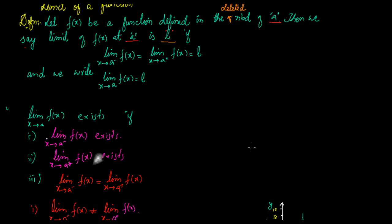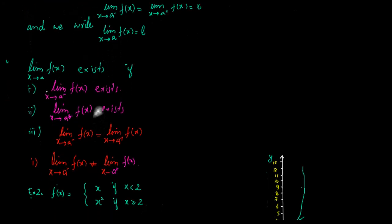Hello friends. In the previous video we learned the limit of a function, and we learned that for the limit of a function to exist, three conditions are important: the left-hand limit and the right-hand limit should exist, and also the left-hand limit and the right-hand limit should be equal. We also discussed that if at least one of these conditions is not satisfied, the limit does not exist. We discussed case one — where the left-hand limit is not equal to the right-hand limit — with two examples.